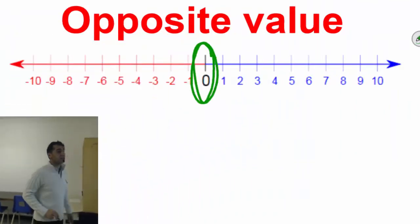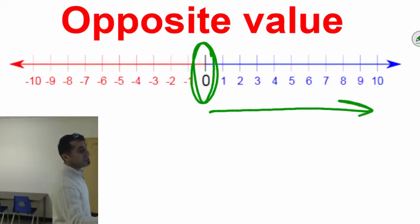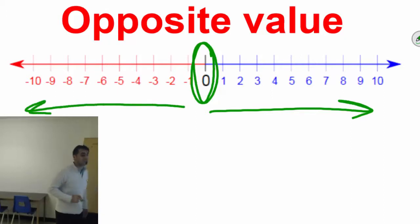In the number line, in the middle, you have the value 0. On the right side of 0, you have positive numbers. On the left side of 0, you have negative numbers.